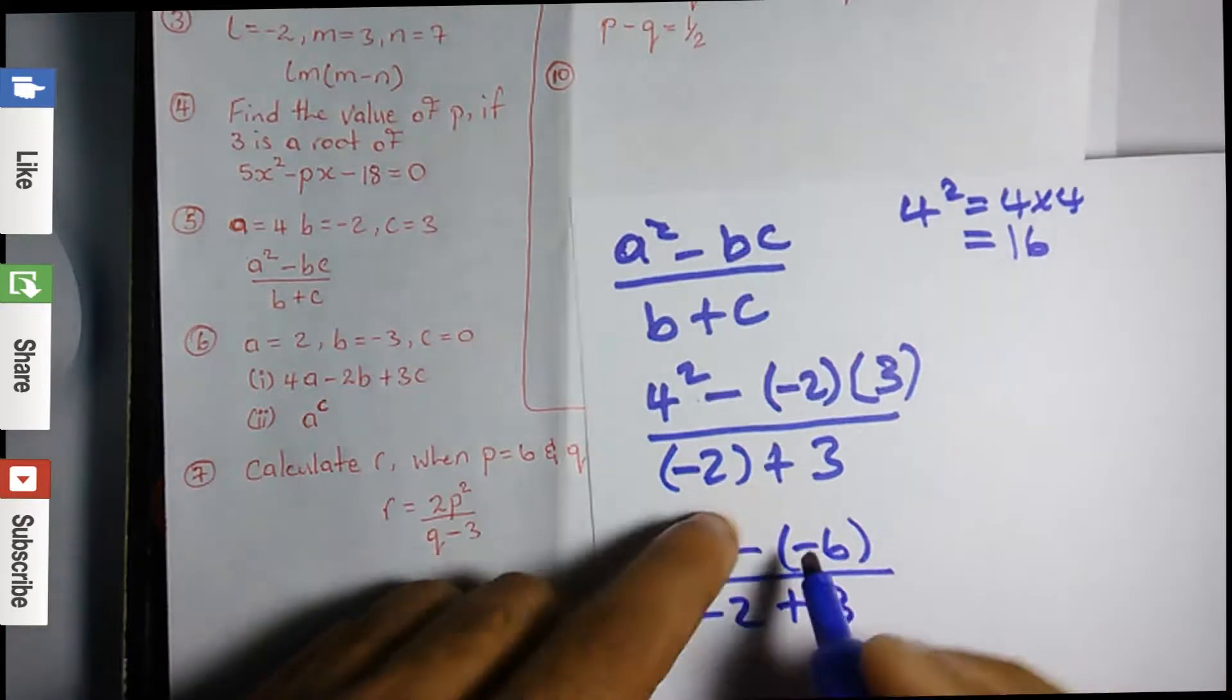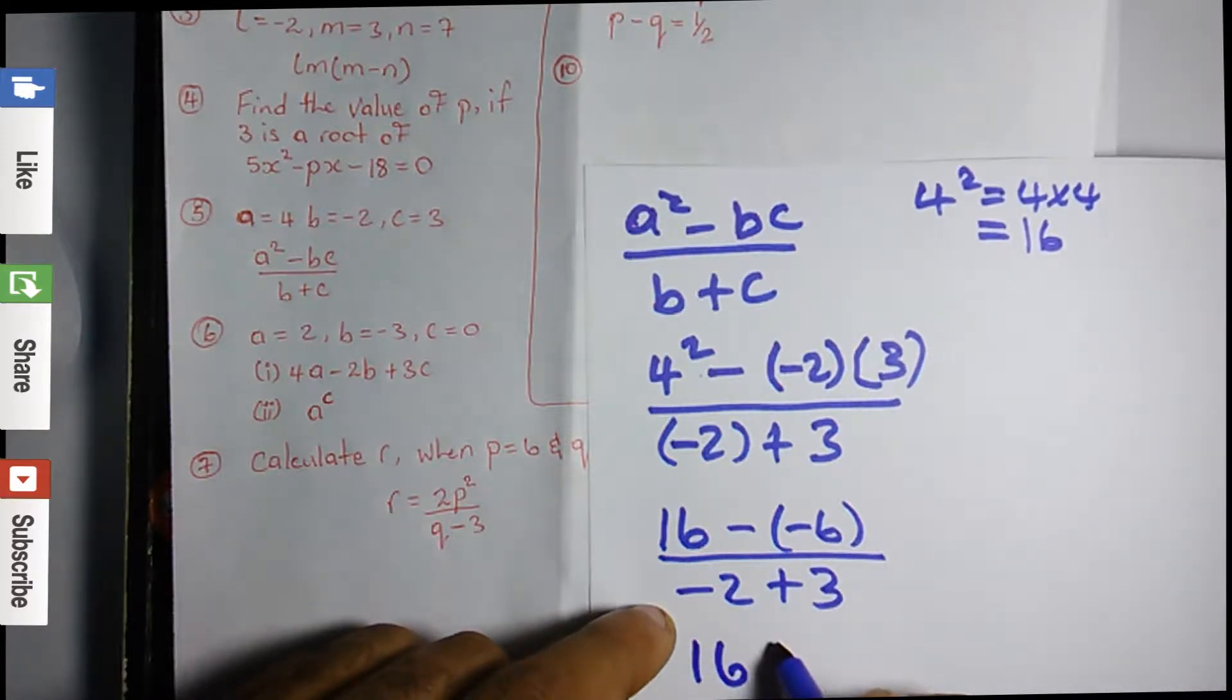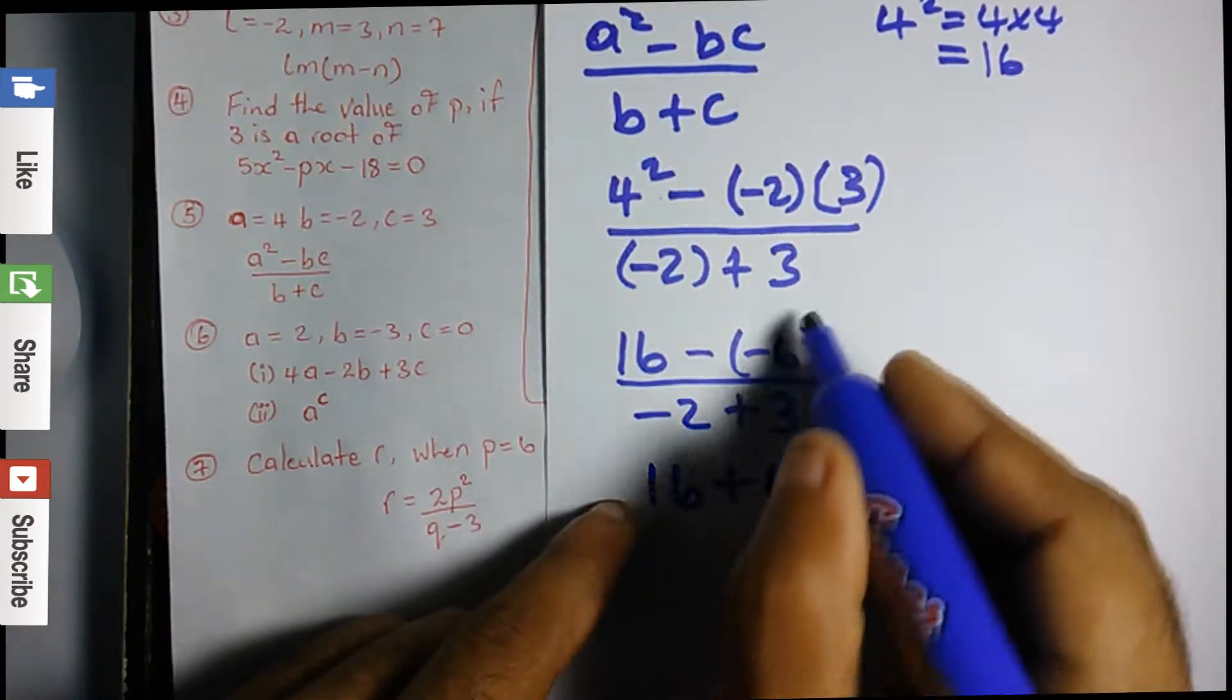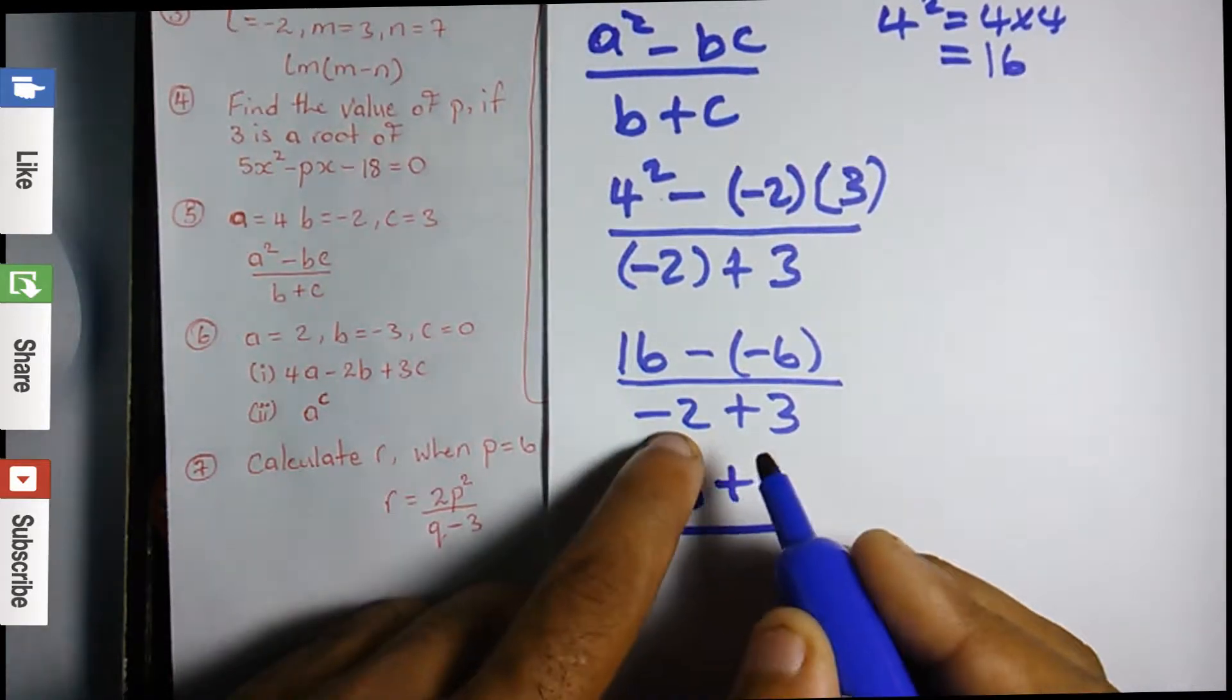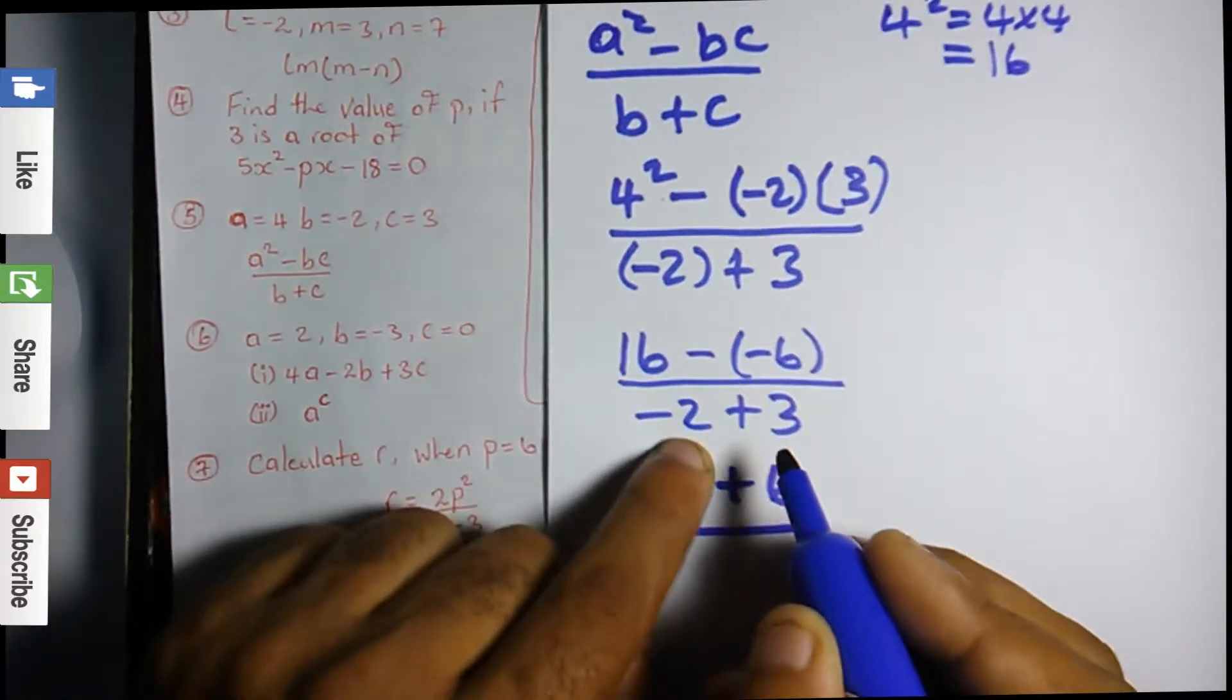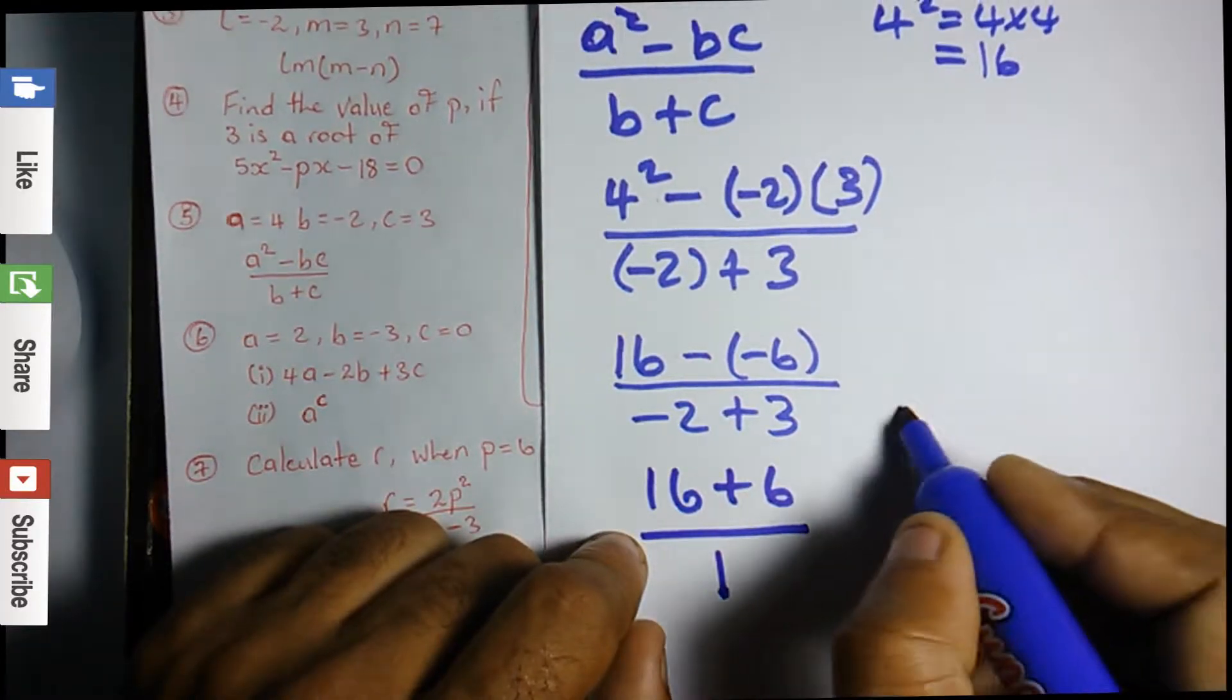We could go ahead and multiply and say positive because negative times negative is positive, so we could say +6. 16 plus 6, because negative times negative is positive, all over -2 plus 3 is 1. We have 2 negative signs and 3 positive signs, so these two cancel each other. We are left with a positive sign.